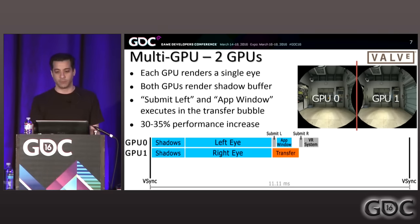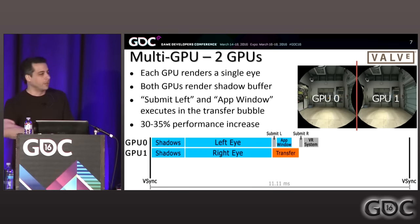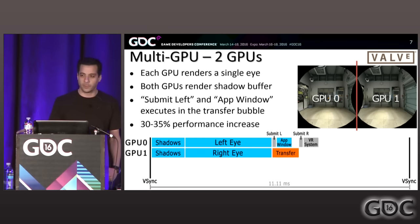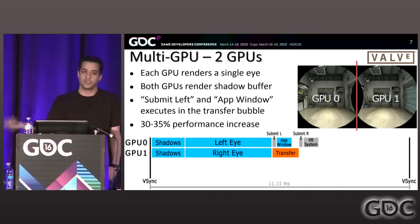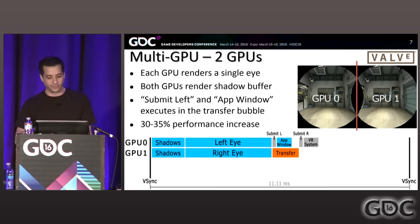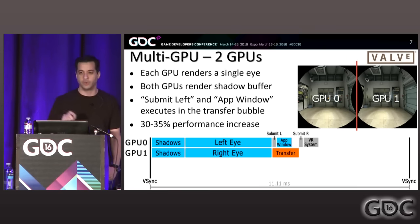There will be a bubble after the app window where GPU zero waits for the transfer to complete, then you submit the right eye and the VR system takes over. Overall, with the same workload, you're only getting about 30 to 35 percent performance boost. Shadow rendering happens redundantly, work at the end of the frame still has to happen, and there's a bubble from the transfer. So it's not a doubling of performance, but a genuine 30 to 35 percent increase.